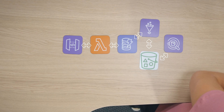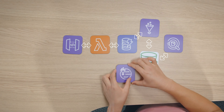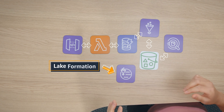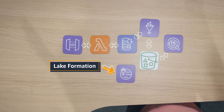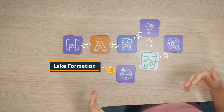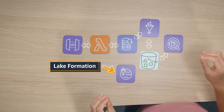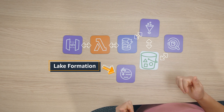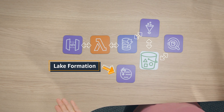The best place to secure access to your data lake is with AWS Lake Formation. Lake Formation provides a single view for managing all of the services of your analytics workflow, including S3 buckets, Glue jobs, and Athena tables.